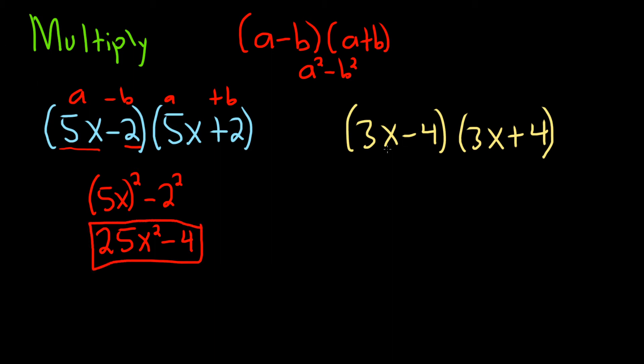The second one is very similar. This is your a, this is your b, this is your a, this is your b. So it's (a-b)(a+b). That's a². So (3x)² minus 4².